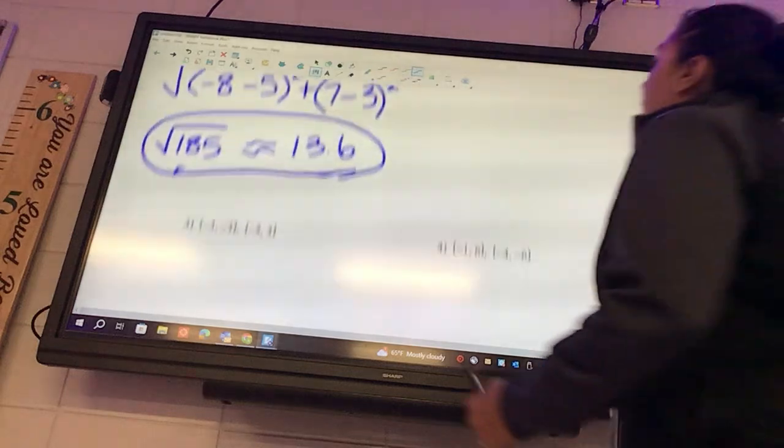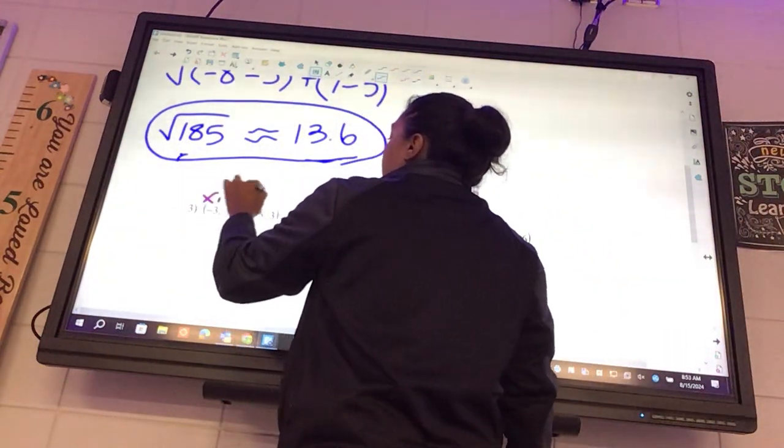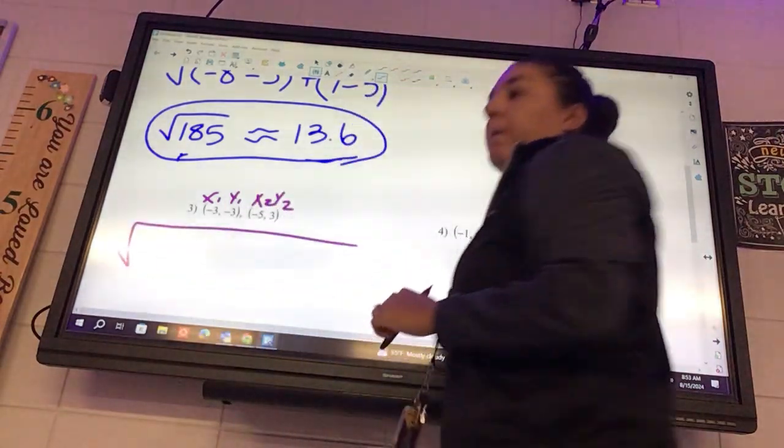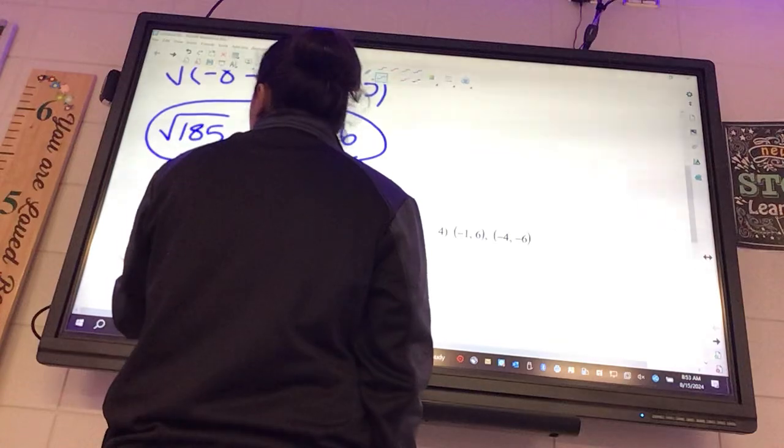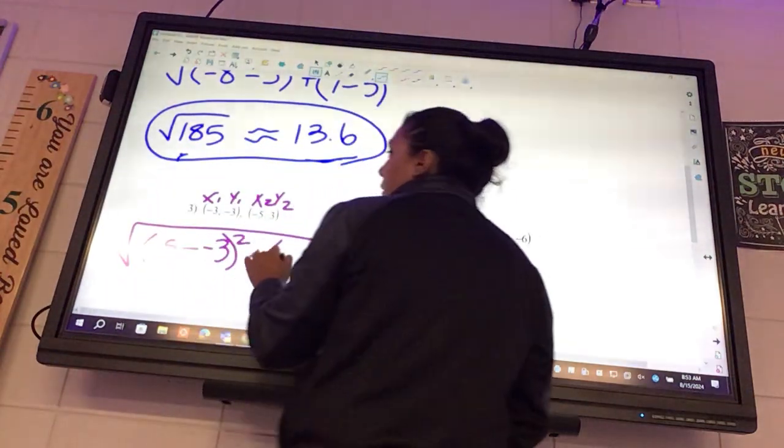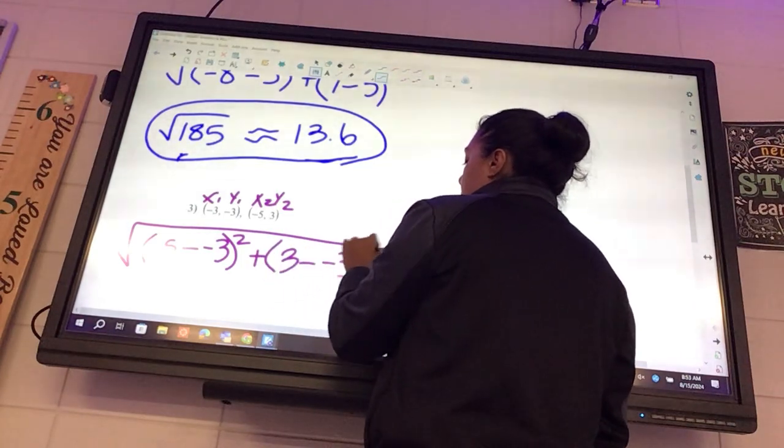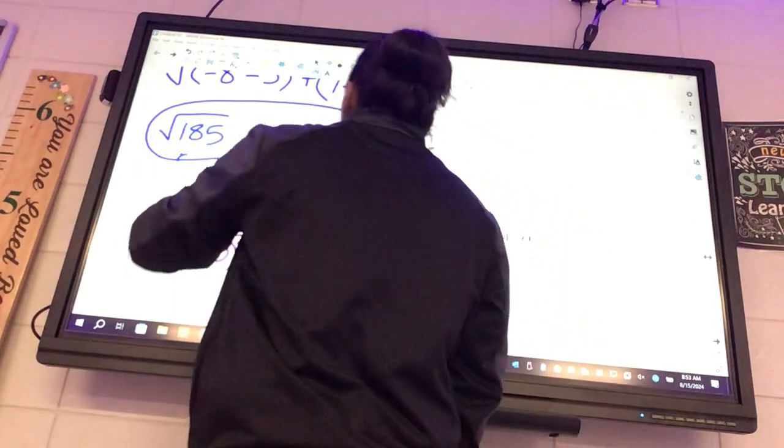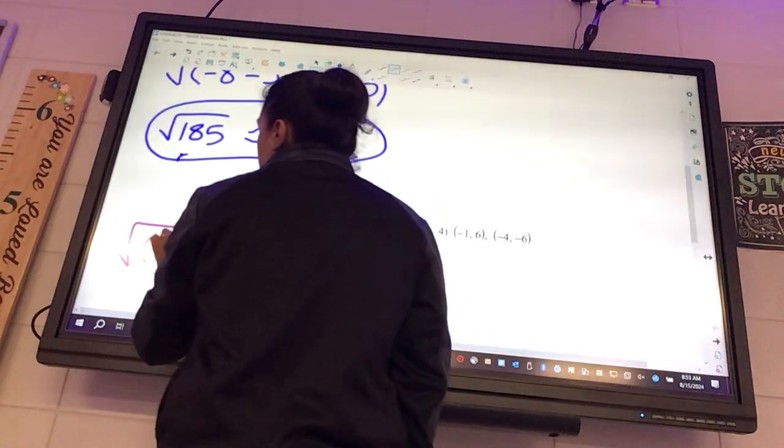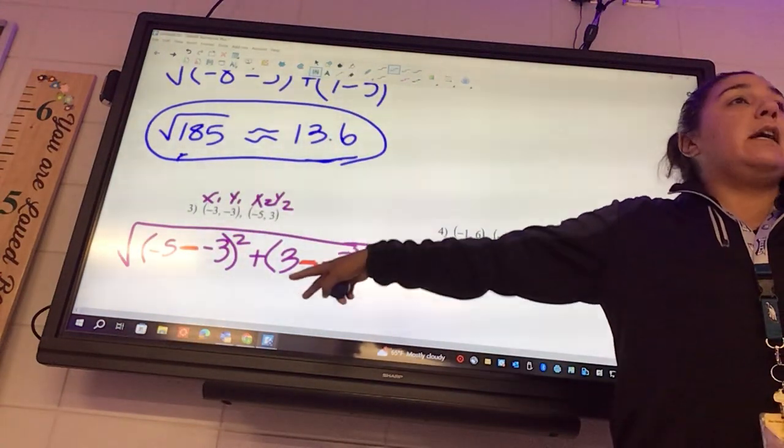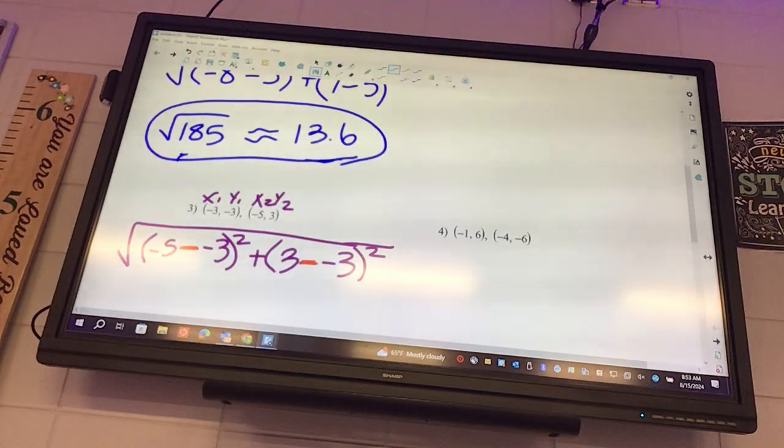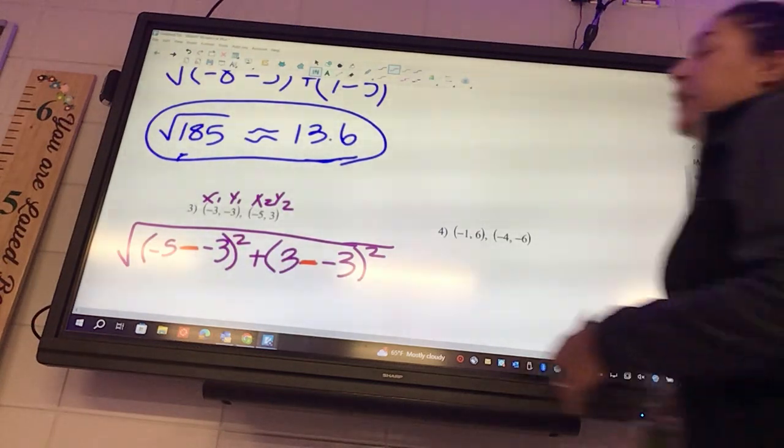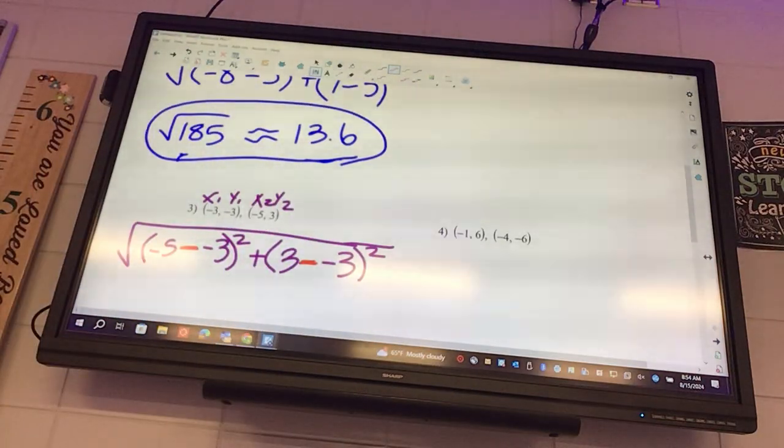Okay, number three. We're going to go ahead and say X1, Y1, X2, Y2. So it's going to look like parentheses, negative 5 minus negative 3 squared plus my Y2 is 3 minus negative 3 squared. Okay, I'm just going to mark it here. See my two red ones? Those are a minus sign. Everything else is a negative sign. And if you get an error on your calculator, that's probably what it is. You didn't use a minus when you're supposed to use a negative or vice versa. So the two red ones are the minus signs.